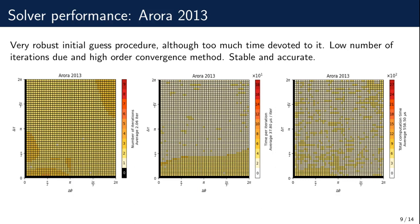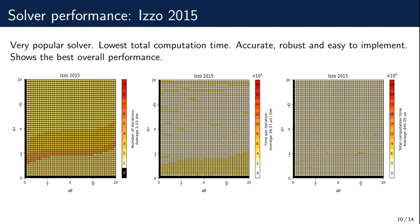Finally, when it comes to Izzo's algorithm, it is seen to require a mean of two iterations, despite having an increase for the region near tau equals pi halves. The initial guess procedure is based on a linear approximation, being less accurate than Arora's but faster. All these facts make this algorithm require the lowest amount of time to compute a particular solution.